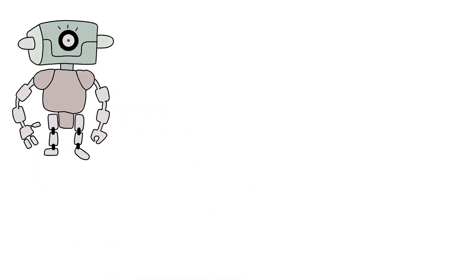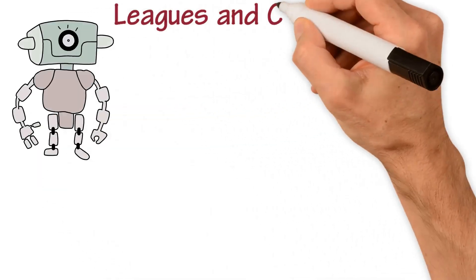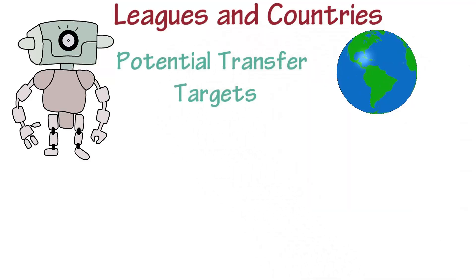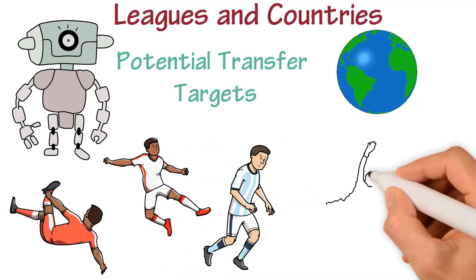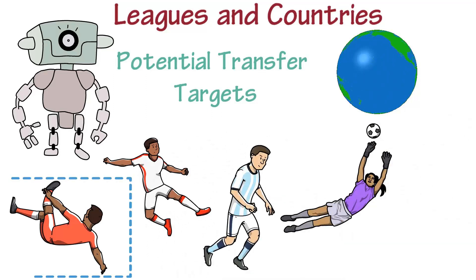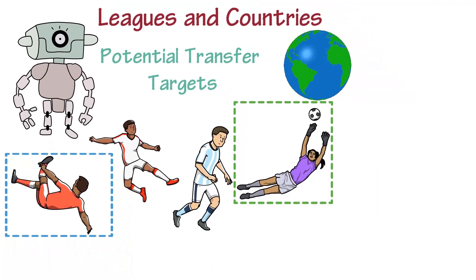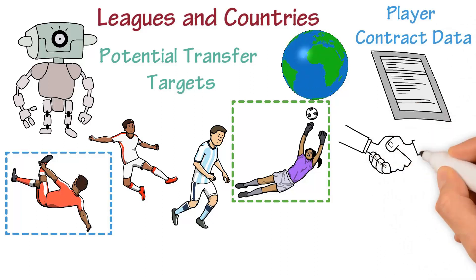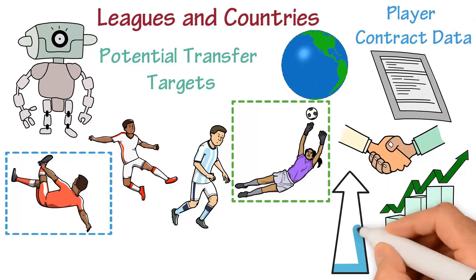Lastly, AI technology can also be used to analyze player data from different leagues and countries, allowing teams to identify potential transfer targets from all over the world. This can help teams expand their scouting networks and find the best talent from a wider pool of players. Furthermore, AI algorithms can also be used to analyze player contract data and help teams negotiate better deals, making the transfer process more efficient and cost-effective.